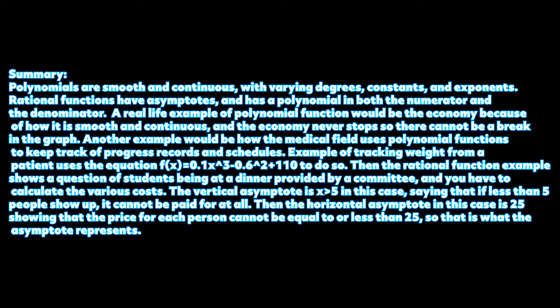The vertical asymptote is x is greater than 5 in this case, saying that if less than 5 people show up, it cannot be paid for at all. Then the horizontal asymptote in this case is 25, showing that the price for each person cannot be equal to or less than 25, so that is what the asymptote represents.